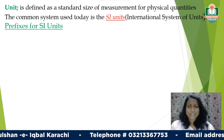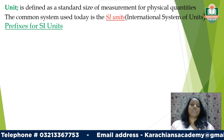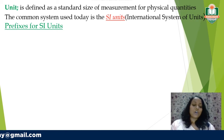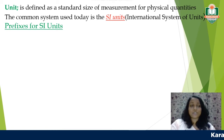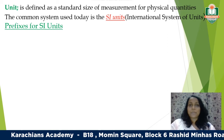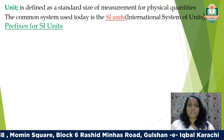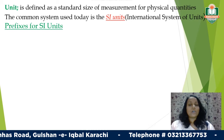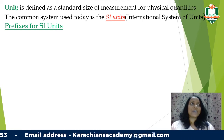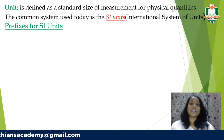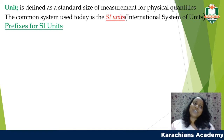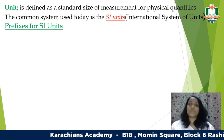A unit is a standardized size of measurement for physical quantities. The importance of having a common unit system evolved over centuries. Initially people used their feet or hands to measure, but these were inconsistent — everyone's elbow-to-finger length differs. This caused problems especially in trade, where the barter system was used. So there was a need for a common system, and today we have the International System of Units, known as SI units, used all over the world.